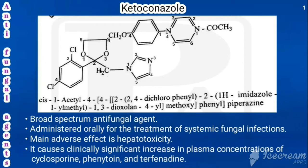For the chemical name of ketoconazole, we choose piperazine as the parent. The first portion of piperazine has a 1-acetyl group. At the fourth position, phenyl is attached, giving us another 4. The dioxolane is then attached at the 4-position of phenyl.